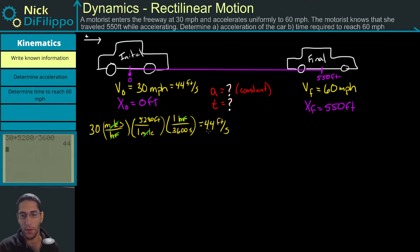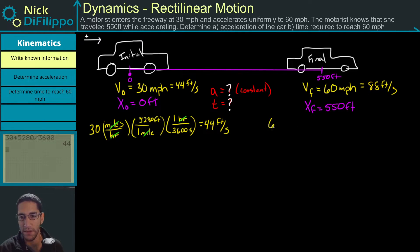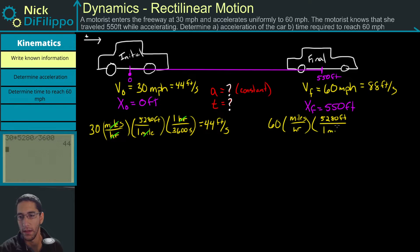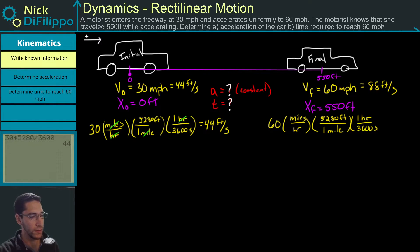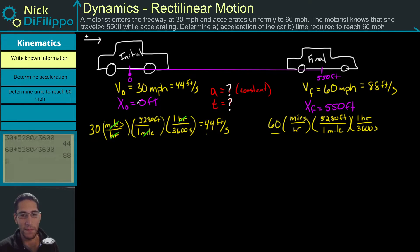Now for 60 miles per hour — I can just double the result. I know this is going to be 88 feet per second. To verify: 60 times 5,280 divided by 3,600 gives 88. We knew this was 88 because this speed is double the previous speed, so the feet per second value is just doubled.